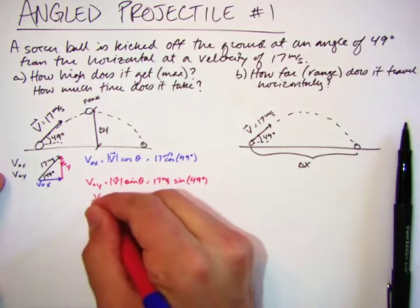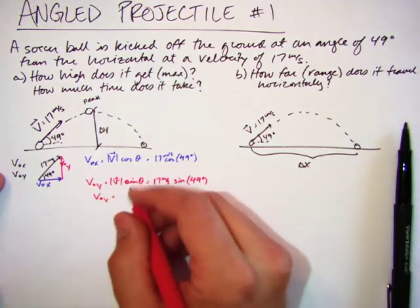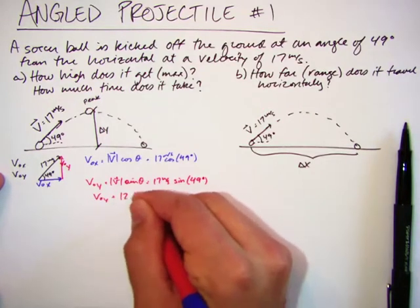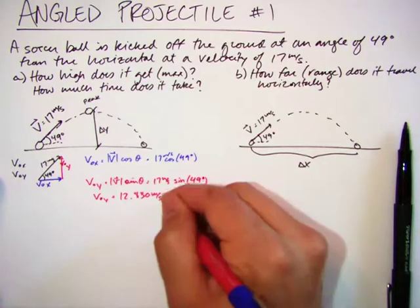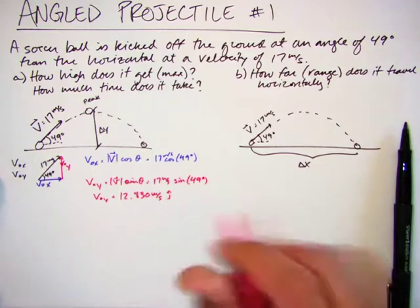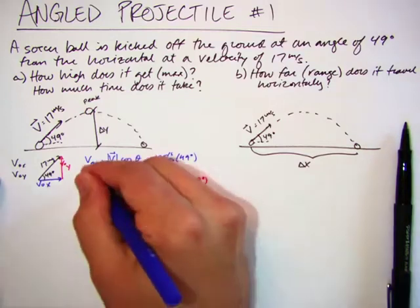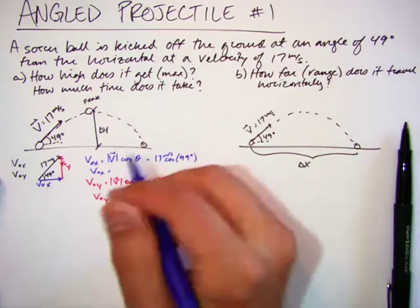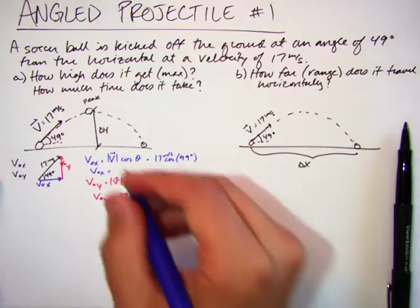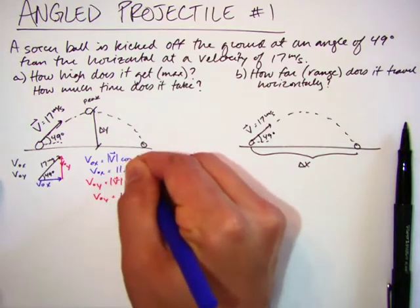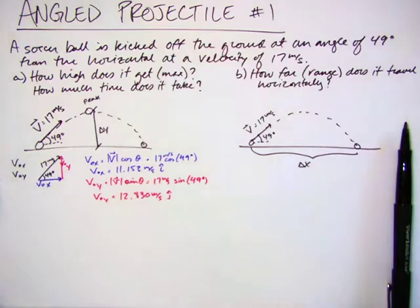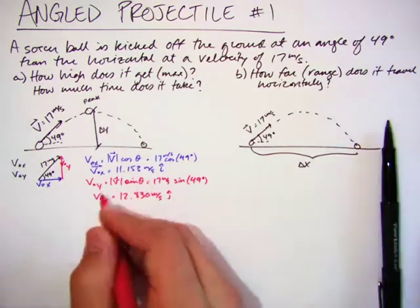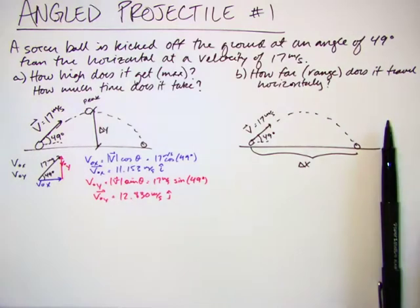If I solve those out, I will get v0y is 12.830 meters per second, and that's in the j direction. I want to write it as a vector. v0x is 11.153 meters per second, and that's in the i direction, just so that I make sure I know it is a vector, it does have a direction.